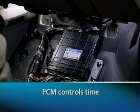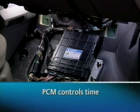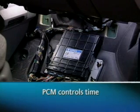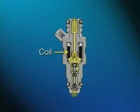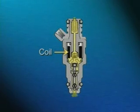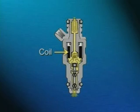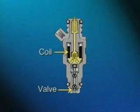The PCM controls the time that the fuel injector pintle is held open in order to meter the proper amount of fuel into the combustion chamber. The injector coil in a fuel injector is a coil of wire. When current flows through a coil of wire, a magnetic field is created around the coil.